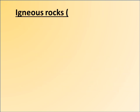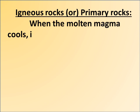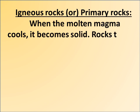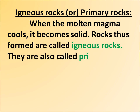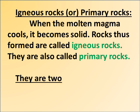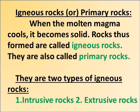Igneous rocks, also called primary rocks: when the molten magma cools, it becomes solid. Rocks formed in this way are called igneous rocks, or primary rocks. There are two types of igneous rocks — intrusive rocks and extrusive rocks.